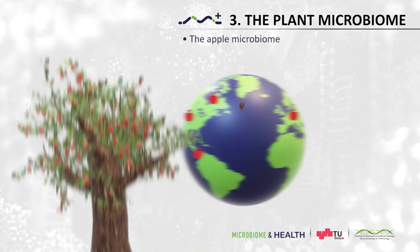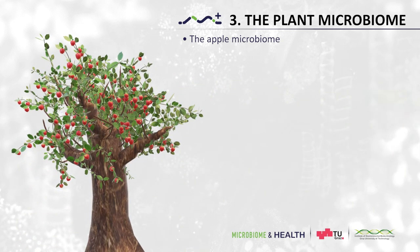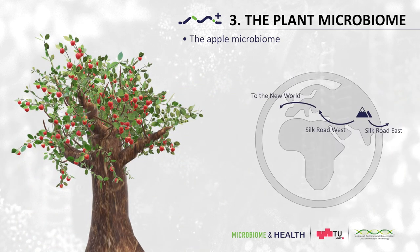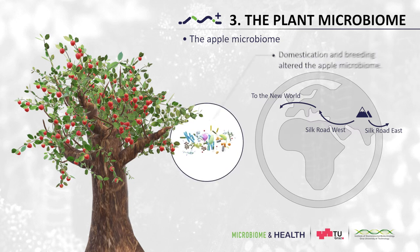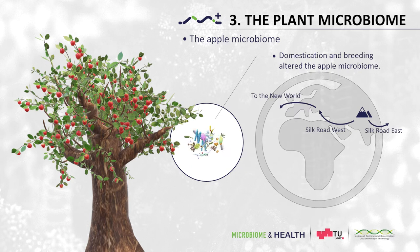Imagine — the apple microbiome can even be traced back to its ancestors. Apple was domesticated about 4,000 to 10,000 years ago in the Tian Shan Mountains of Central Asia and moved along the Silk Road with travelers and traders. Domestication and breeding resulted in apples of larger size, richer in nutrients, but also with a reduced ability to defend against pathogens. Changes are also visible at the microbiome level.